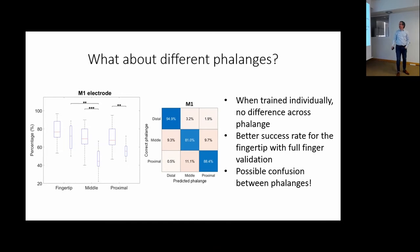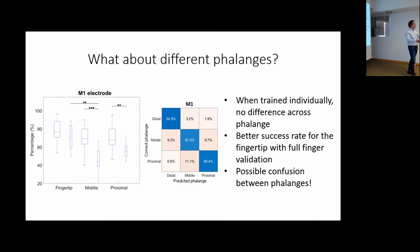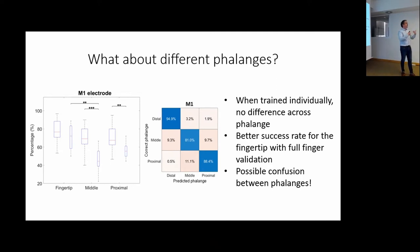Comparing different phalanges, the fingertip had the highest success rate, with middle and proximal phalanges having lower rates — consistent with physiology, as the fingertip has the highest resolution of tactile sensations. An interesting result: when subjects made mistakes, they sometimes pointed to the wrong phalange entirely. We activate a pad on the fingertip and the subject reports feeling it on the middle or proximal phalange. This is due to the innervation of the finger — activating electrotactile stimulation can produce referred sensations, a known phenomenon in electrotactile stimulation from other applications as well.